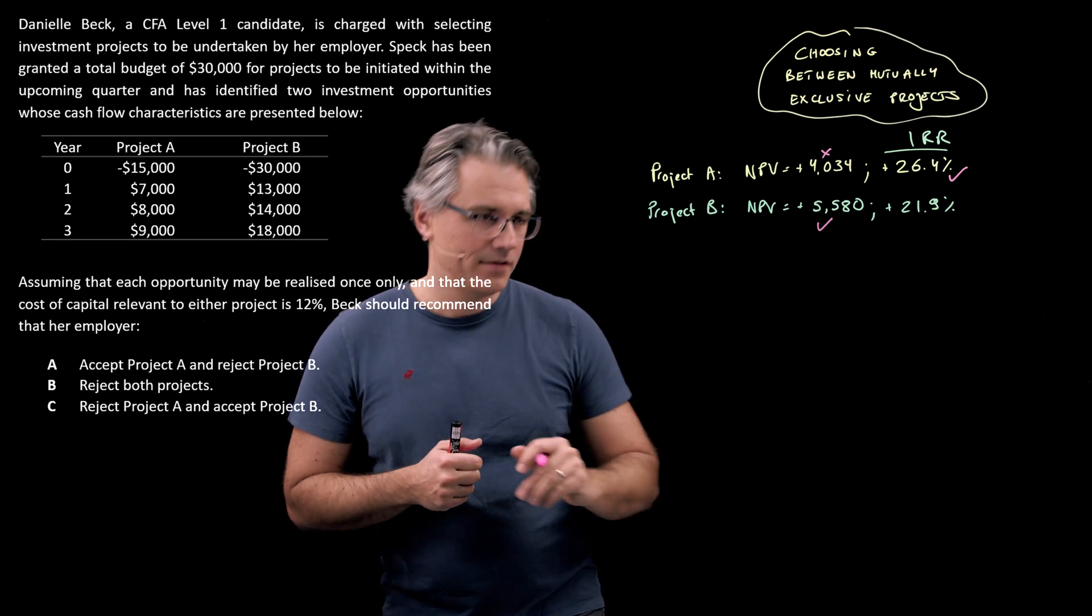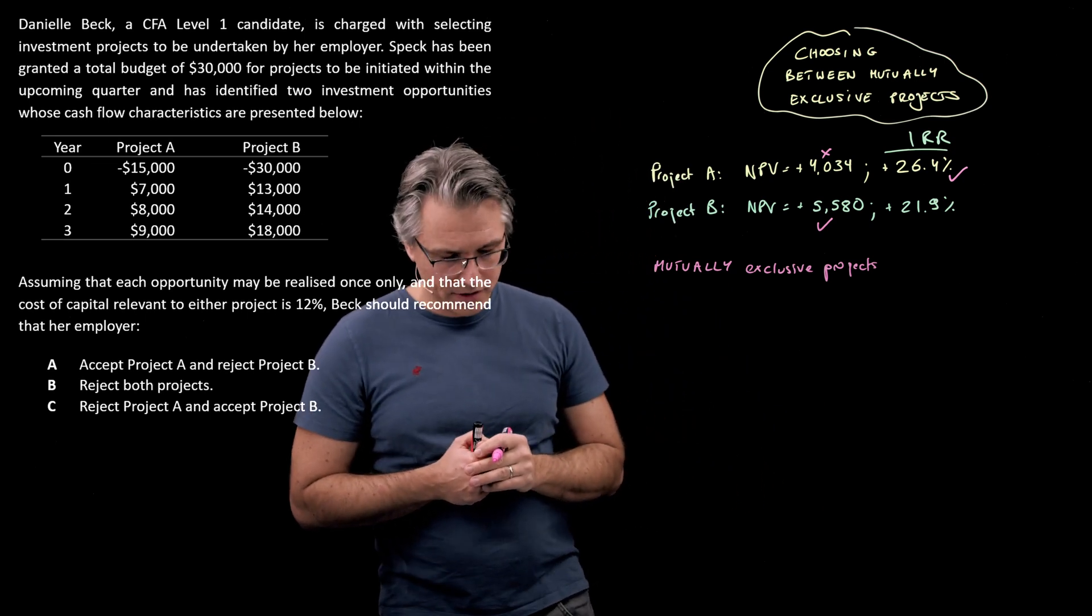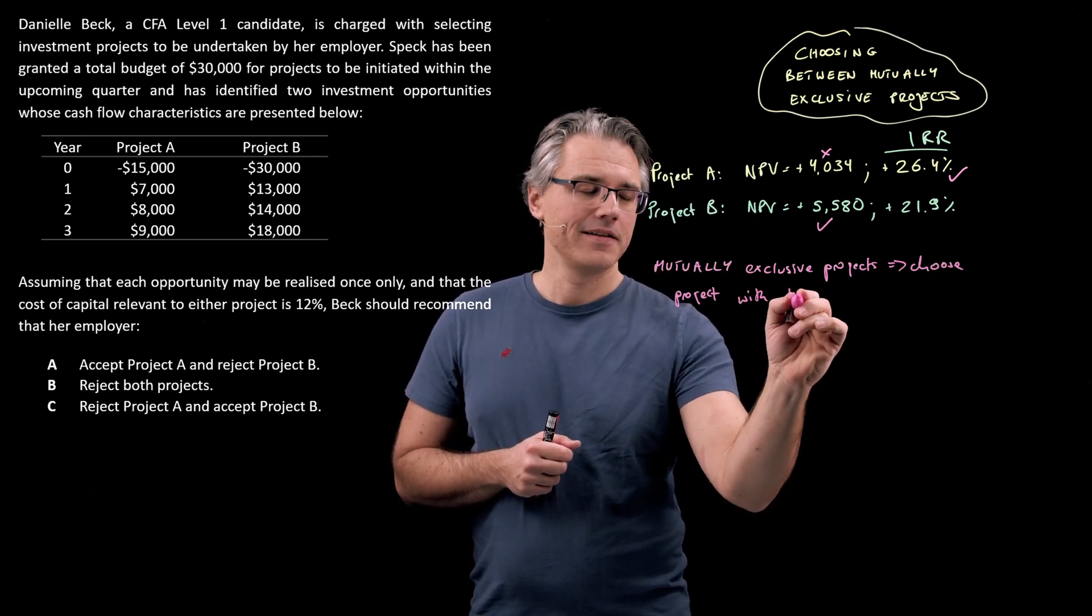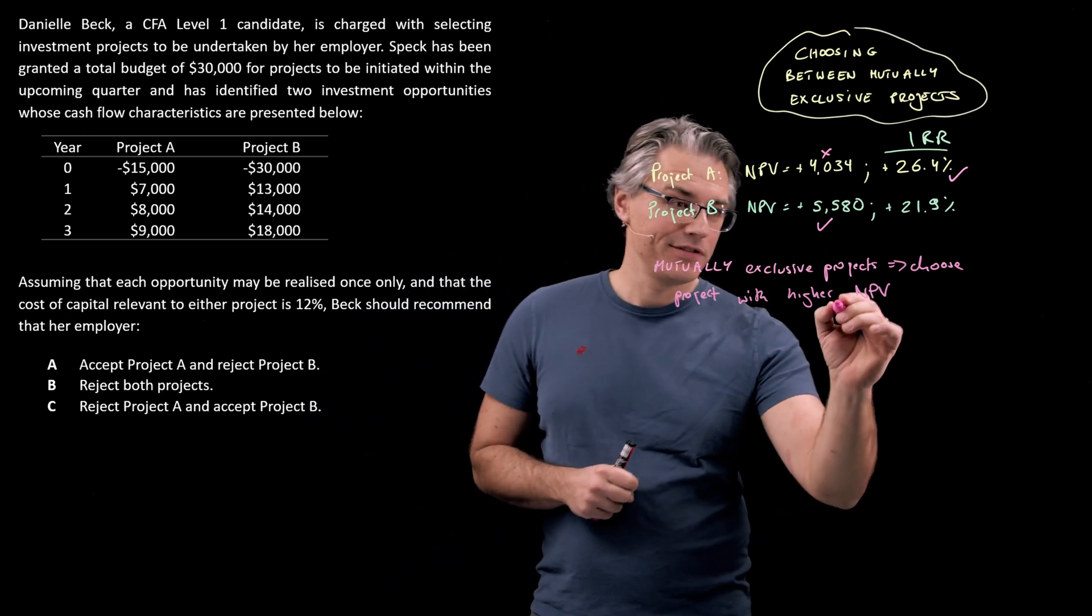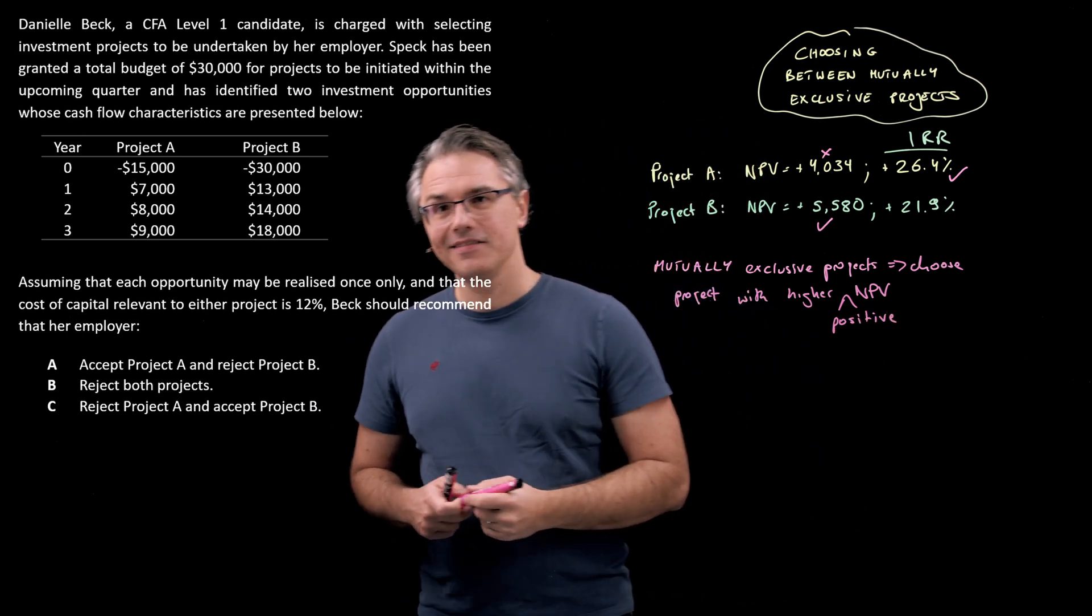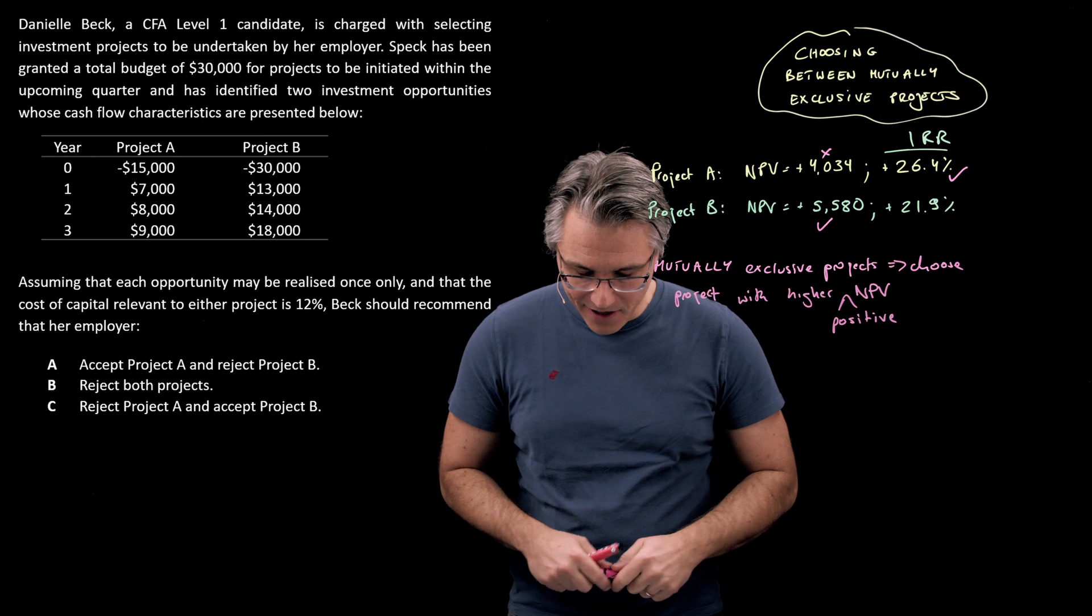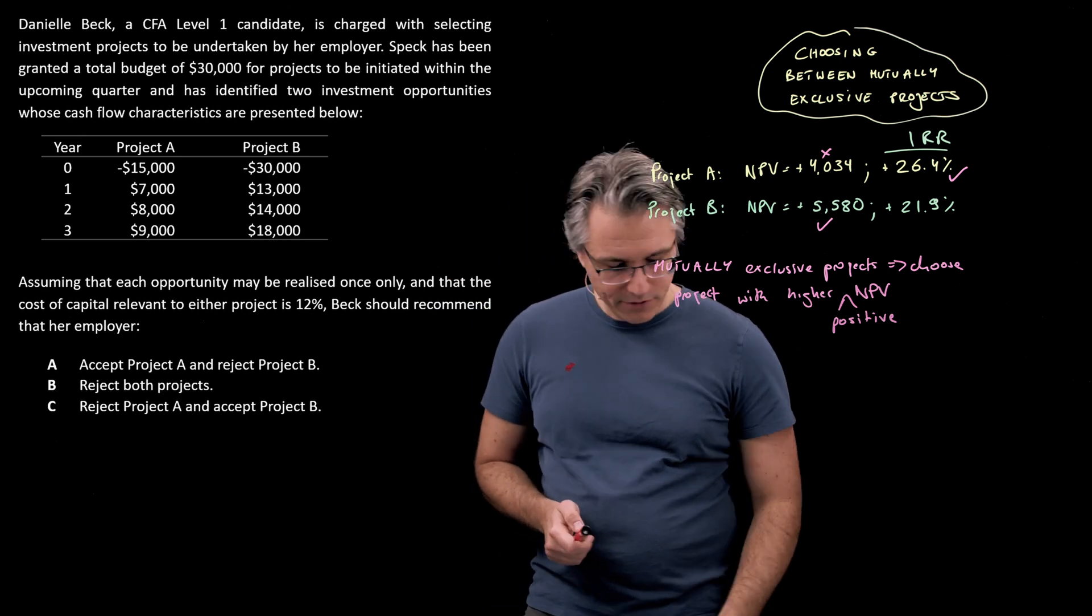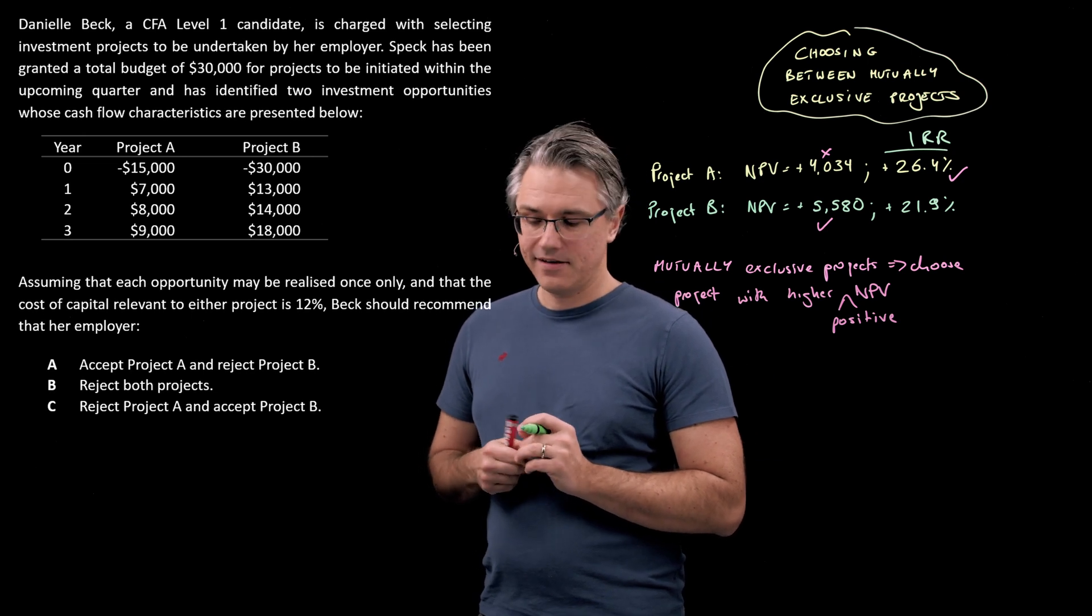And based on NPV alone, in the case of mutually exclusive projects, you would go and choose Project B. So let me write down this decision rule for mutually exclusive projects: the decision is choose the project with the highest or higher NPV, obviously providing that the NPV is positive. So you know, higher positive NPV. Of course, if the NPV is negative, it may be higher than something else which is also negative, but don't choose it—it would destroy value. So in this case we ought to be choosing Project B, definitely ought to be choosing Project B, so rejecting Project A and accepting Project B, and that's answer C.